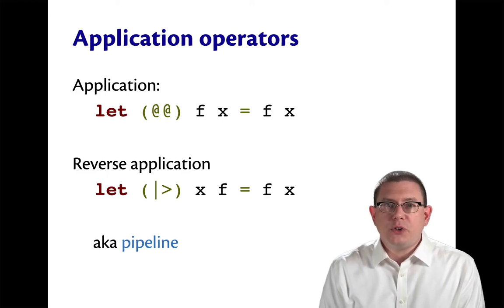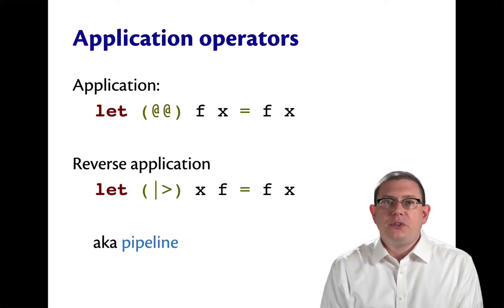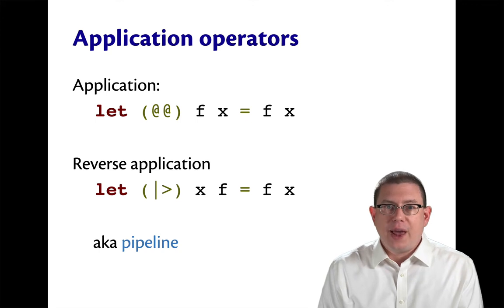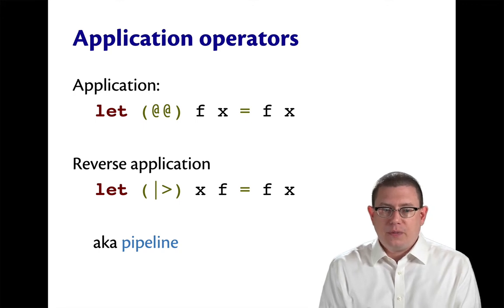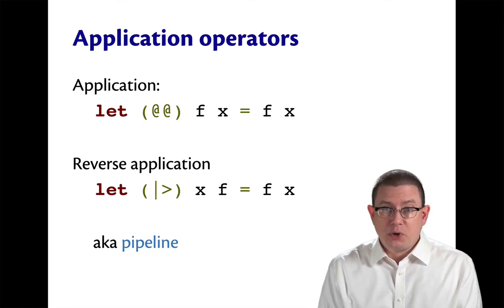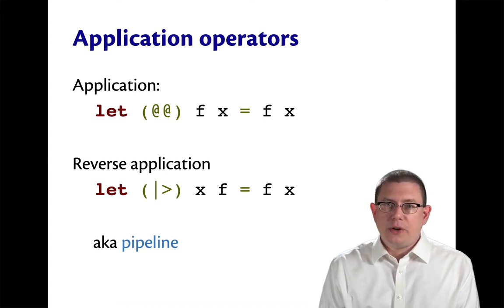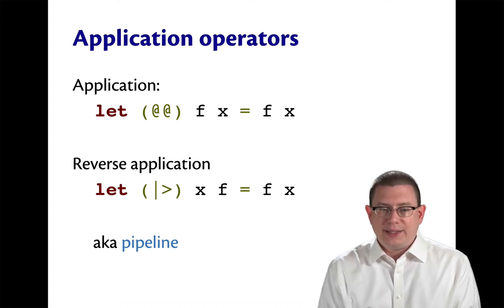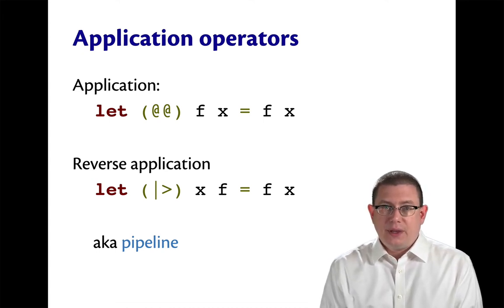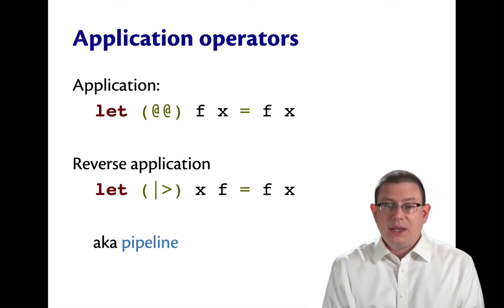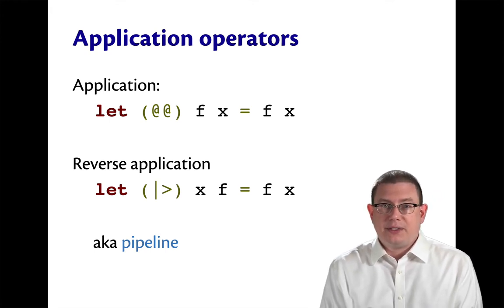Here are two binary operators built into OCaml's standard library that are related to function application. The first is application, the second is reverse application. The application operator is written with two at signs, and it's very simple — it just takes in a function f and an argument x, and applies f to x.